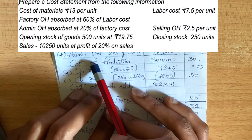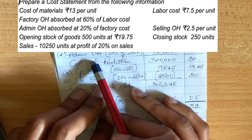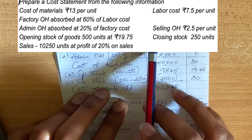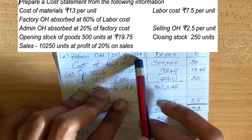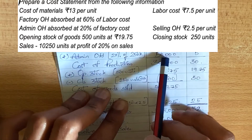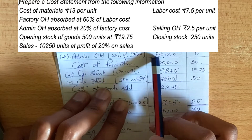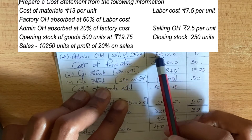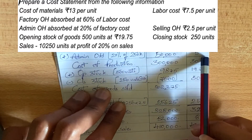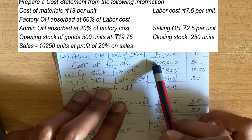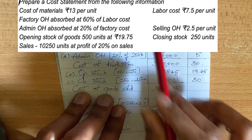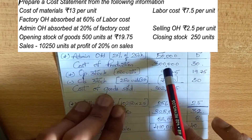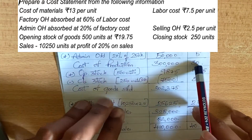Administration overheads are absorbed at 20% of factory cost. Factory cost is 2,95,000, so 20% gives administration overhead of 50,000 — wait, that gives us approximately 59,000. Per unit divided by 10,000 gives 5. So that is the per unit administration overhead, and the total cost of production for 10,000 units produced is now complete.